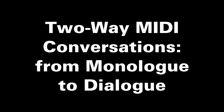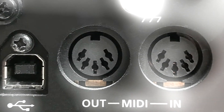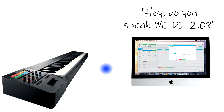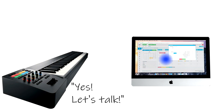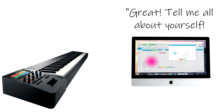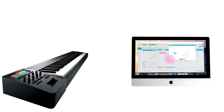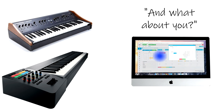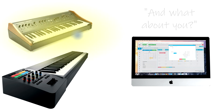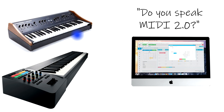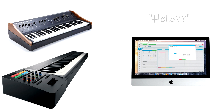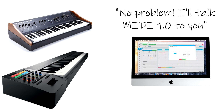MIDI 1.0 messages went in one direction, from a transmitter to a receiver. MIDI 2.0 is bi-directional and transforms MIDI from a monologue to a dialogue. With the new MIDI CI capability inquiry messages, MIDI 2.0 devices can talk to each other and auto-configure themselves to work together. They can also exchange information on functionality, which is key to backward compatibility. MIDI 2.0 gear can find out if a device doesn't support MIDI 2.0, and then simply communicates using MIDI 1.0 messages.